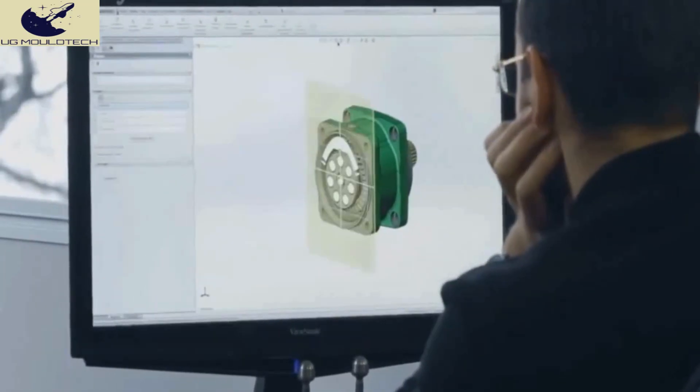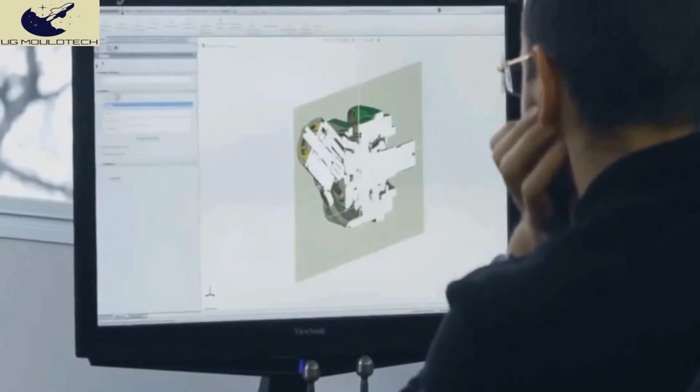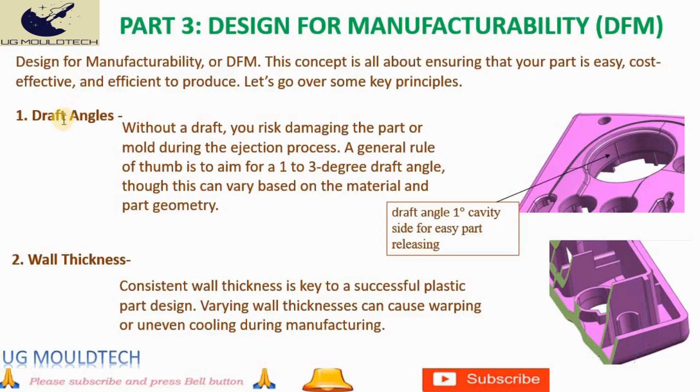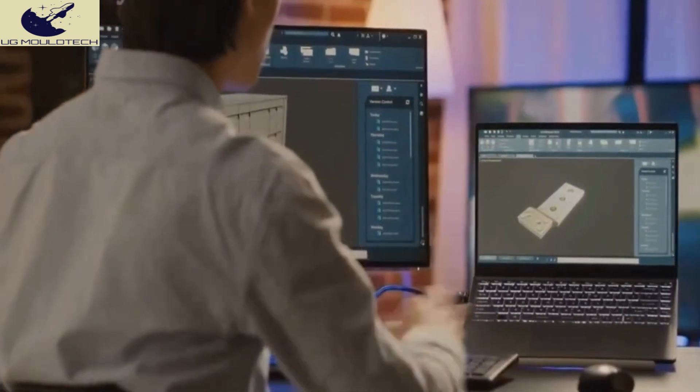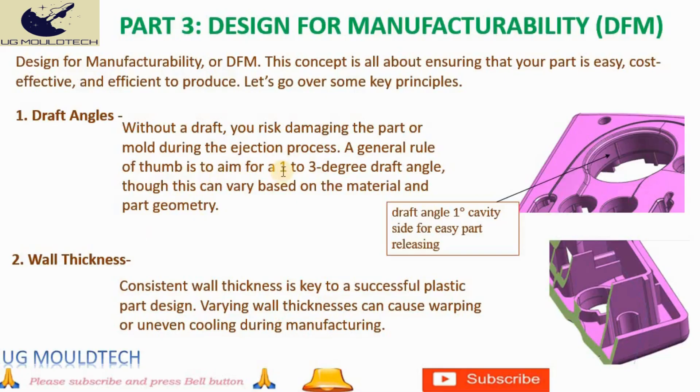Let's dive into one of the key DFM principles: draft angles. Draft angles are the slight angles added to the vertical walls of a molded part. They ensure the part can be easily ejected from the mold without sticking. Without these angles, you risk damaging both the part and the mold during ejection, leading to costly repairs and downtime. A good rule of thumb is to aim for a 1 to 3 degree draft angle. This helps in smooth ejection and maintains the integrity of the part.